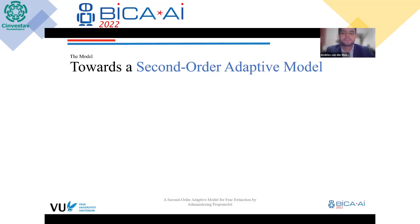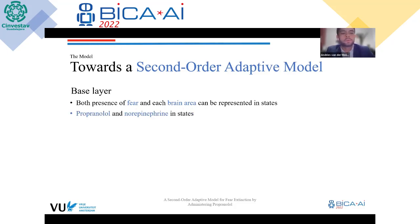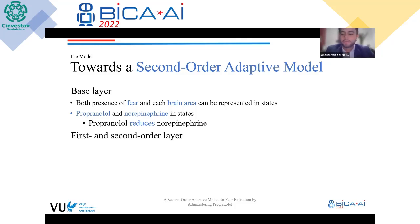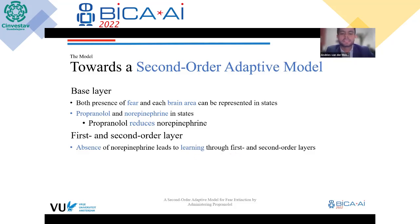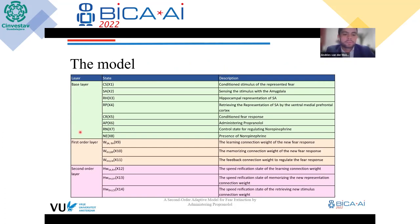We created a second-order adaptive model which includes a base layer where we modeled the presence of fear in each brain area, as well as propranolol and norepinephrine represented as states. Propranolol reduces norepinephrine in the model. The first and second-order layers facilitate learning and active-phase learning respectively. Our model consists of a total of 14 states.